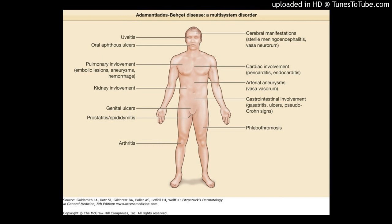A high degree of suspicion is necessary for a patient who presents with any number of the following findings: arthritis, arthralgia, cardiovascular problems of an inflammatory origin, changes of personality, psychoses, deep vein thrombosis, epididymitis, extreme exhaustion, inflammatory problems in chest and lungs, mouth ulcers, nervous system symptoms, problems with hearing or balance, stomach or bowel inflammation, superficial thrombophlebitis, or any other family members with a diagnosis of Behçet's disease.